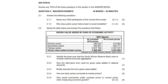2.1.1: Name any two participants of the circular flow model. The answer could be households, business sectors, governments, or foreign sectors — anything along those lines. You just needed to name literally any two.